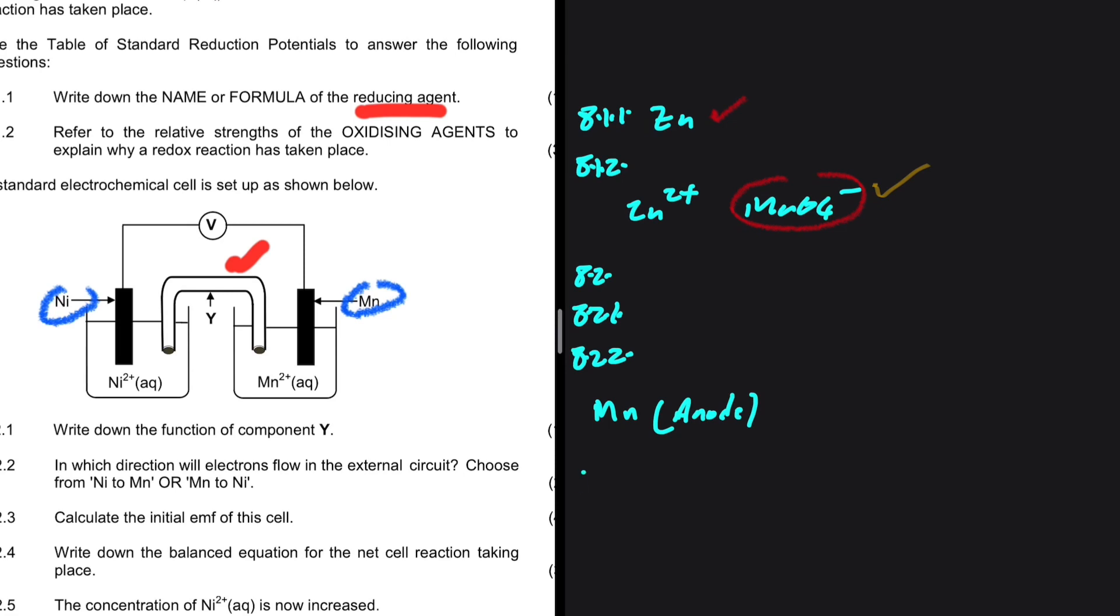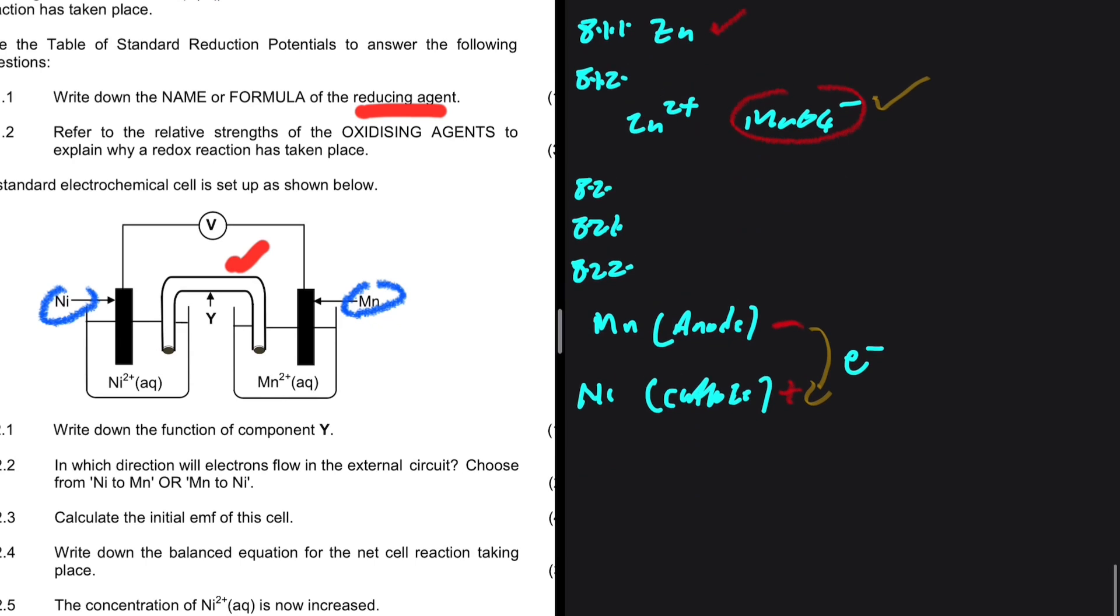While on the other hand, Ni will be our cathode. In a galvanic cell, the anode is negative and the cathode is positive. Even though current flows from positive to negative, electrons flow from negative to positive. So that is the direction of flow of electrons, Mn to Ni.